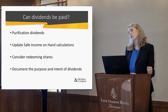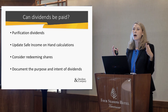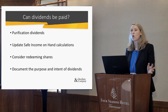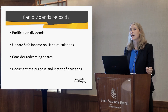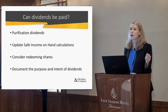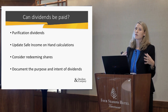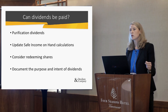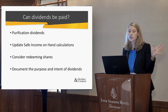Consider redeeming shares where possible. If you've got inter-corporate groups with shares in between — old preference shares or something similar sitting around — maybe consider redeeming them. Then you can still make use of the related party rules without necessarily having to go back and do all of your safe income on hand calculations, although I would still recommend doing them.